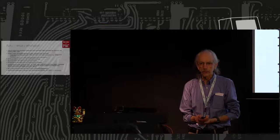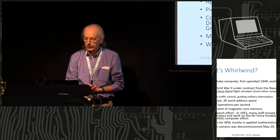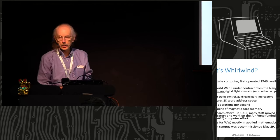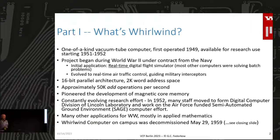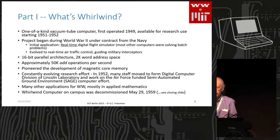The first part is: what is this Whirlwind machine? It was a one-of-a-kind research computer designed in the 1950s. It first started working in 1949 and stayed at MIT functionally until about 1958. The program was begun under a contract from the U.S. Navy — this was all done under the Department of Defense. MIT did a lot of defense work during the war, to an extent that became quite controversial in later decades. Their intention initially was to design an aircraft simulator for training pilots. That evolved, as all good research projects do, into air traffic control and finally into guiding interceptor aircraft.